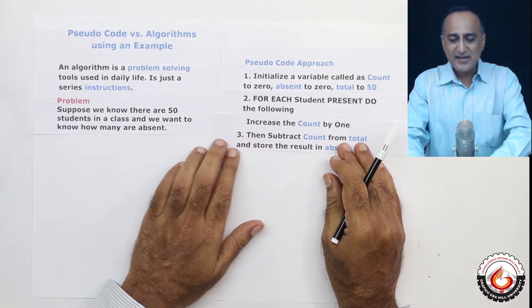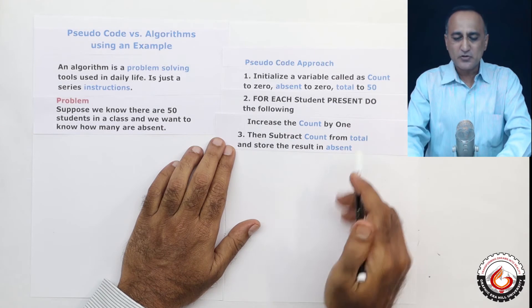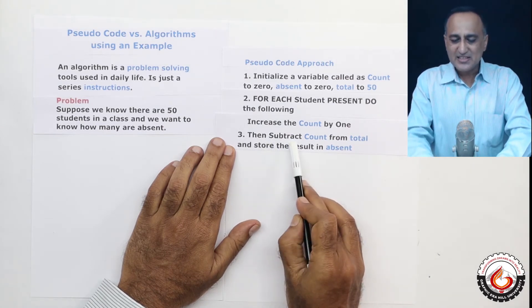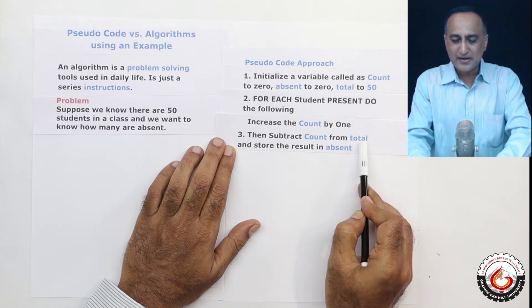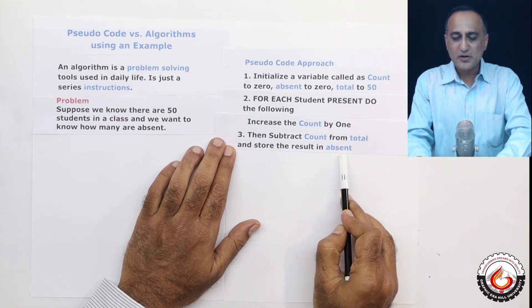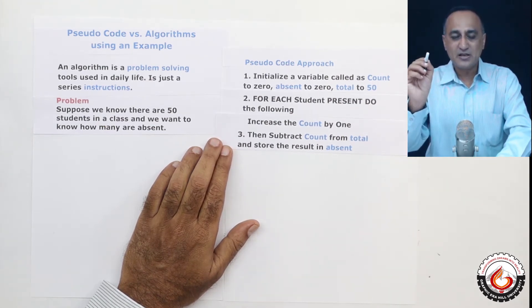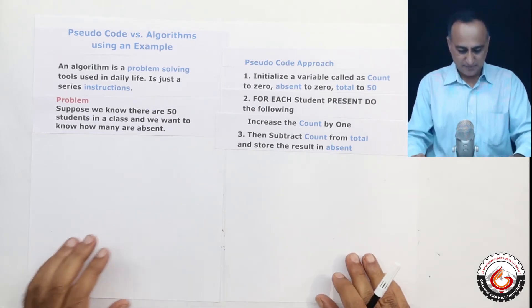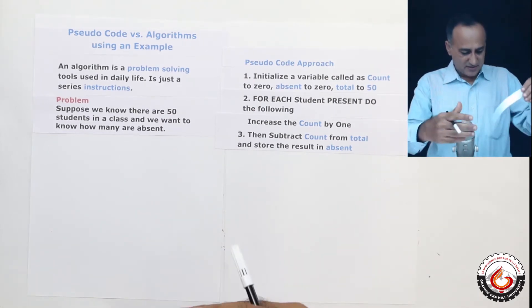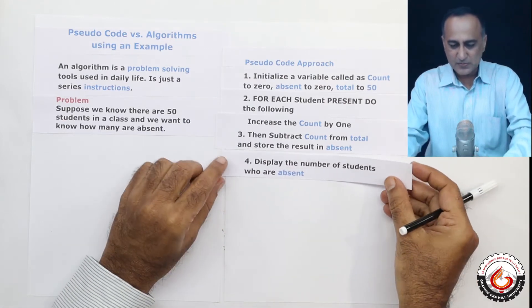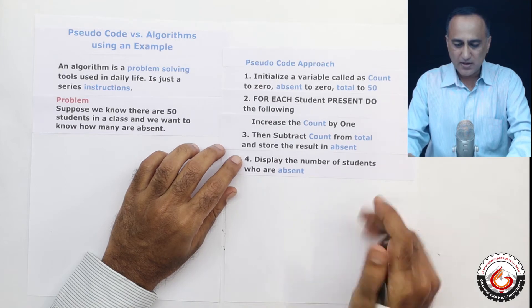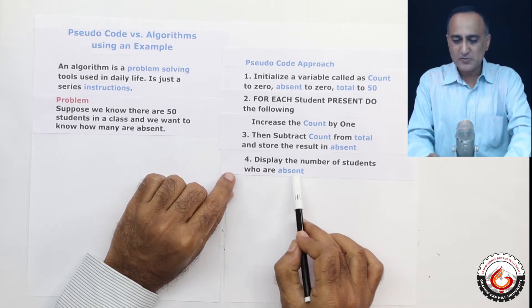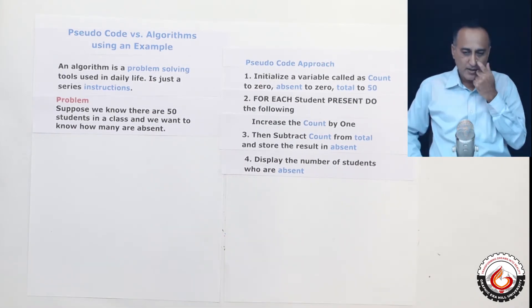Then the next step what I am going to do is I am going to say then subtract count from total, that means count from total if I subtract, the result is going to be stored in absent and it is going to give me the number of students who are absent. Now, finally, if I have to display the result, I am going to just say display the number of students who are absent.